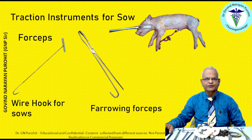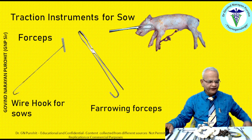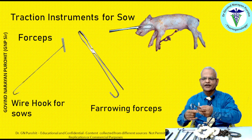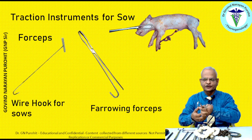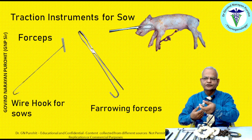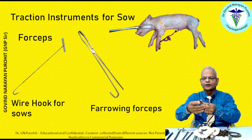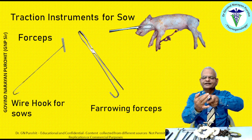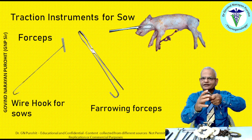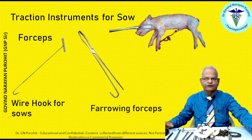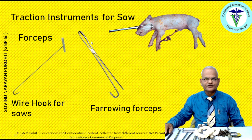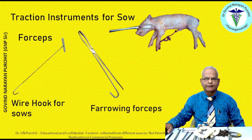For traction instruments for the sow, there are farrowing forceps. A straight farrowing forceps is less useful as it can slip; forceps having a curved end are more useful for farrowing. The wire hook can be applied on the eyes or other parts of the piglet to apply traction.